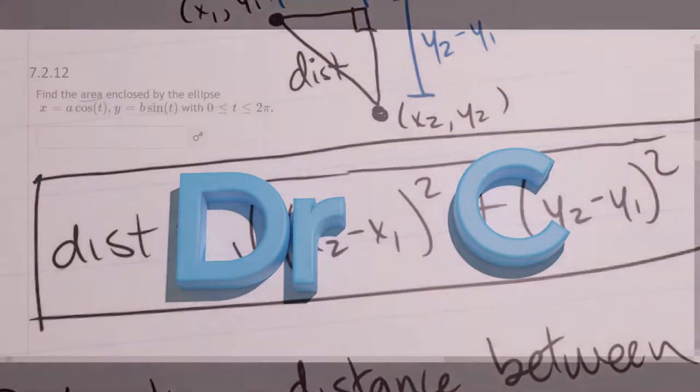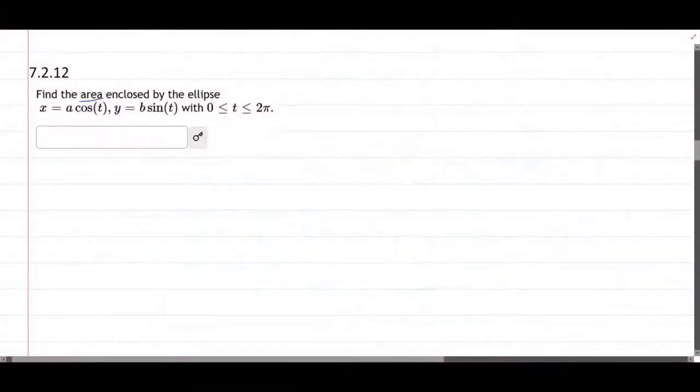We have an area problem, and this is a parameterized function here. It's an ellipse, and they don't tell us the a and the b values. That's okay. We're going to assume they're positive.